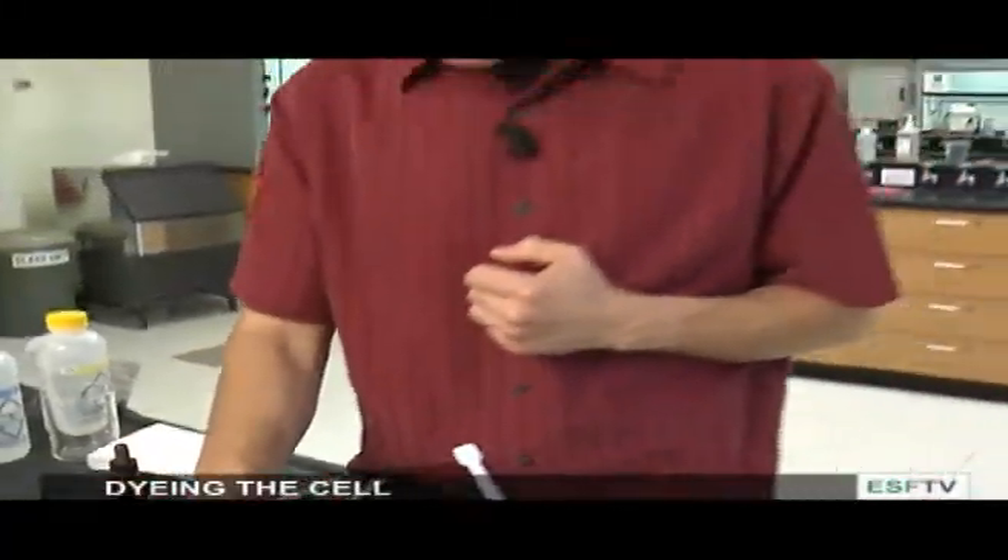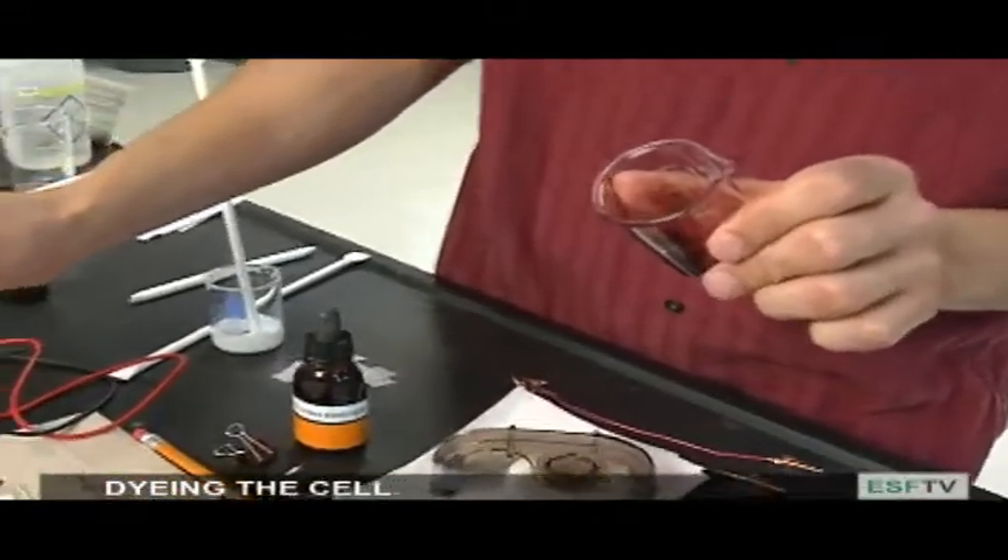At this stage we're ready to dye the cell so it can actually absorb sunlight. To dye the cell we're going to use blackberry juice today. I've extracted some blackberry juice and all we need is a small amount of the juice to place right on top of the cell.